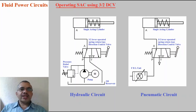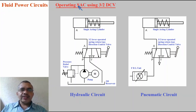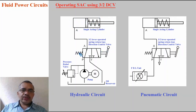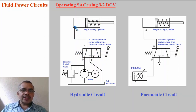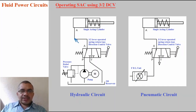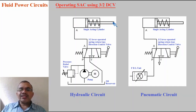Today we shall understand some basic hydraulic and pneumatic circuits. To start with, I am taking a single acting cylinder circuit — operating a single acting cylinder using a 3 by 2 direction control valve. This is the single acting cylinder, operated with the help of a 3 by 2 direction control valve. The single acting cylinder has only one port. When we supply fluid under pressure to port A, the fluid exerts pressure on the piston, causing it to move from left to right — the piston rod comes out. We call this extension.